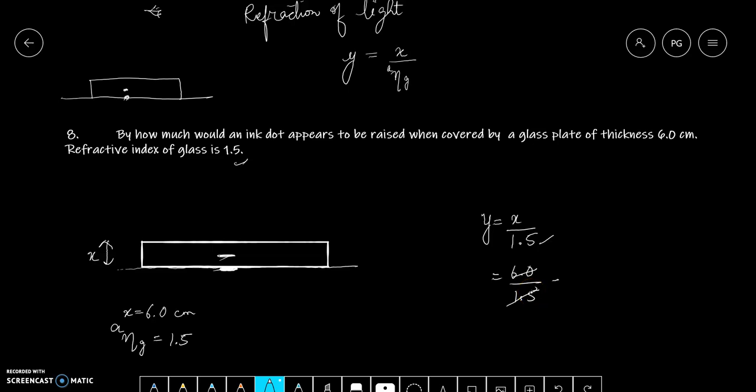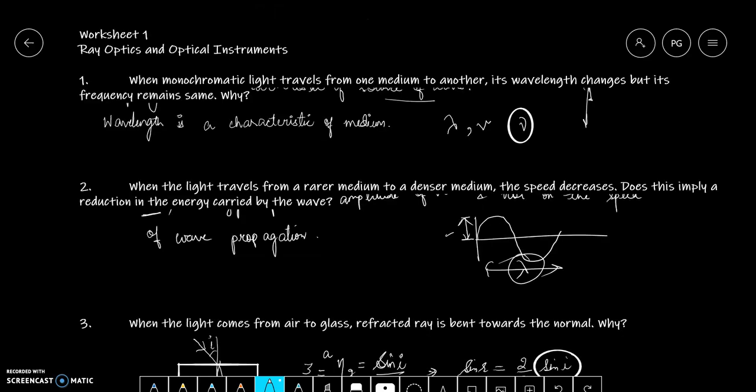We will get 4.0 cm. It means humain appear hoga ki jo ink dot hai ye kitne cm depth pe hai, 4 cm depth pe hai. Toh ye humain kitna raised dikh raha hai, that will be equal to the difference, yani ki it will appear to be 2 cm raised. It will appear to be raised by 2 cm, matlab wo 2 cm upar hai. I hope this worksheet is clear to you. That's all for now, have a good day.